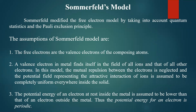Third point: the potential energy of an electron at rest inside the metal is assumed to be lower than that of the electron outside the metal. This is a very important point. The potential energy of the electron which is inside and bounded to the metal is assumed to be very low compared to that of an electron outside the metal, and the electron cannot escape from the metal.